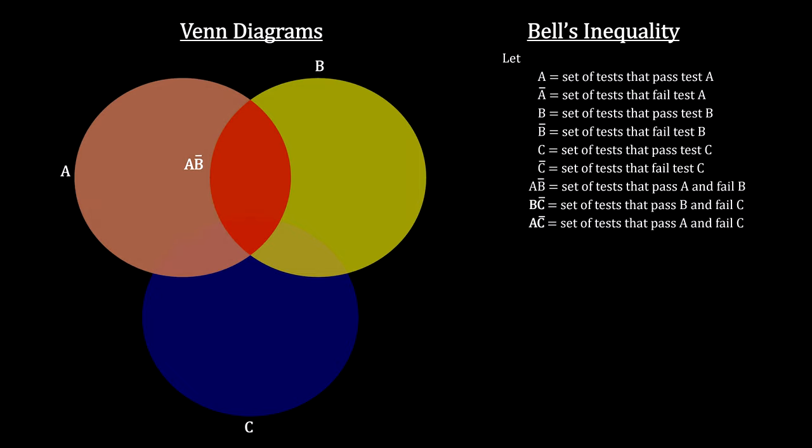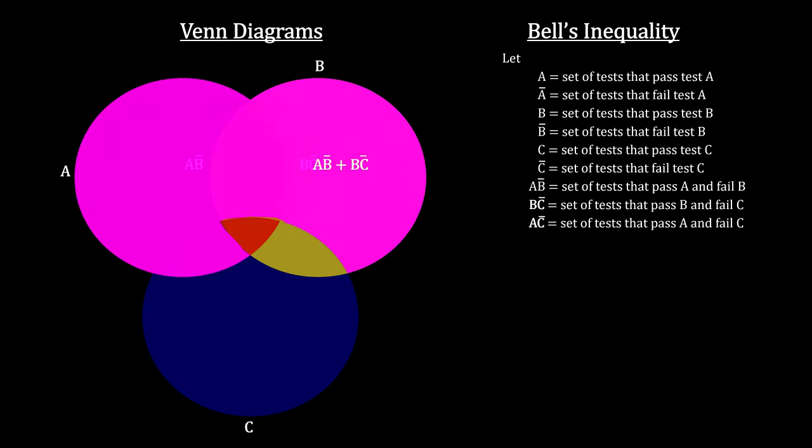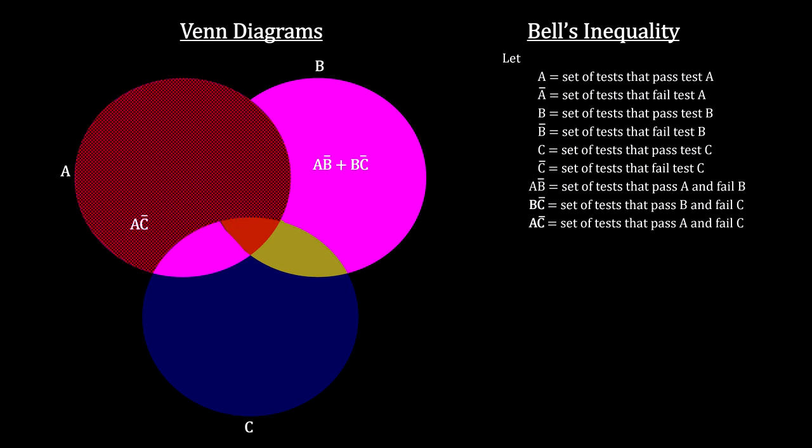Here's the subset A-not-B, and B-not-C. When we combine them, you can see that A-not-C is a subset.